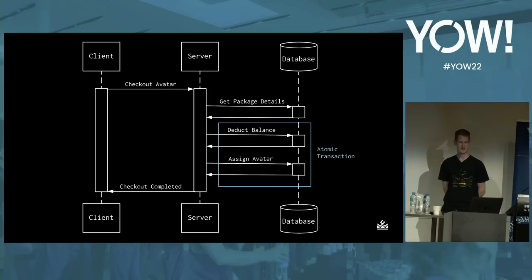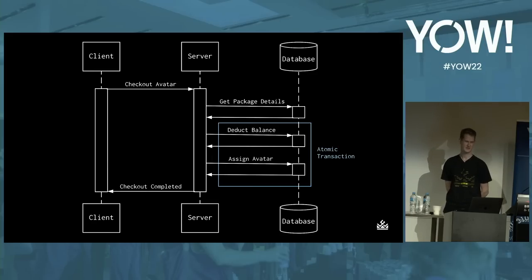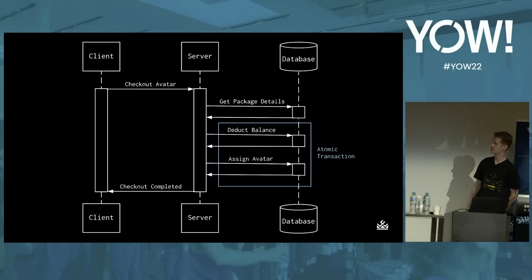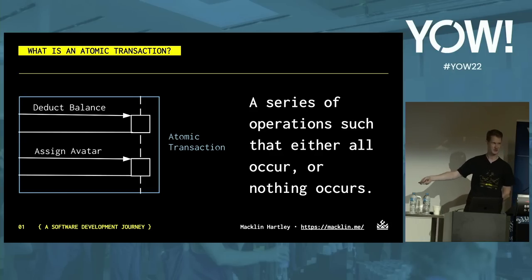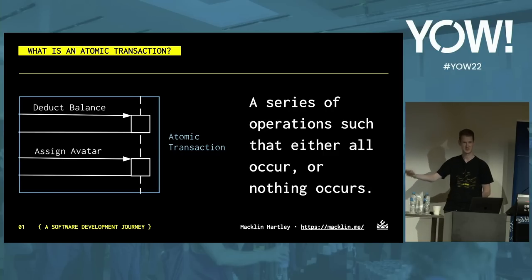The team decides that the easiest way is to integrate into the existing monolithic architecture. We're handling multiple operations within a single request lifecycle with no need to communicate with any other systems — just one server talking to its database. We can leverage atomic database transactions, which allow us to perform a series of operations such that either all succeed or all fail. This prevents weird states where, for example, we take the customer's balance for the avatar cost but don't actually give them the avatar.